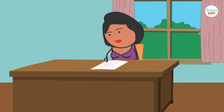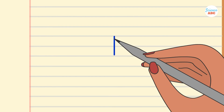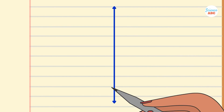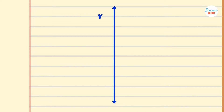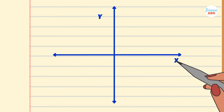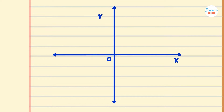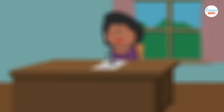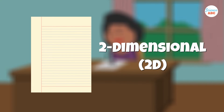When drawing a line on a piece of paper, you can go up and down — the y-axis — as well as left and right — the x-axis. This means that a piece of paper is two-dimensional, as there are only two directions you can go in.